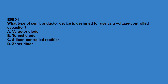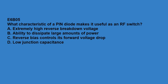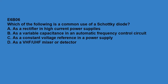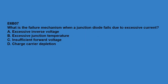E6B04: what type of semiconductor device is designed for use as a voltage-controlled capacitor? A varactor diode. E6B05: what characteristic of a PIN diode makes it useful as an RF switch? Low junction capacitance. E6B06: which of the following is a common use of a Schottky diode? As a VHF-UHF mixer or detector. E6B07: what is the failure mechanism when a junction diode fails due to excessive current? Excessive junction temperature.